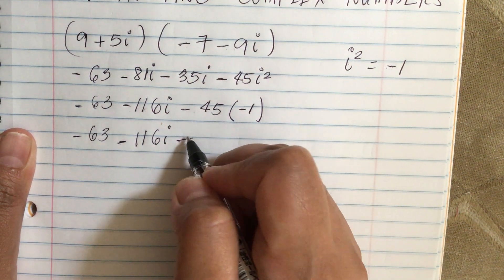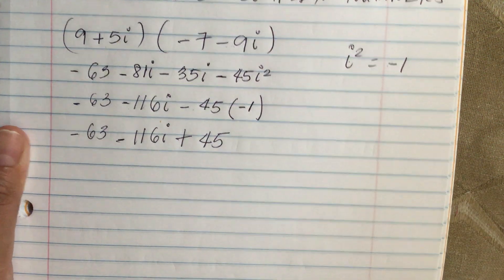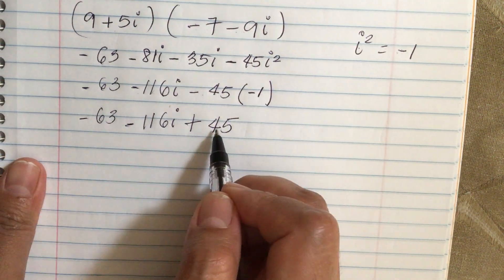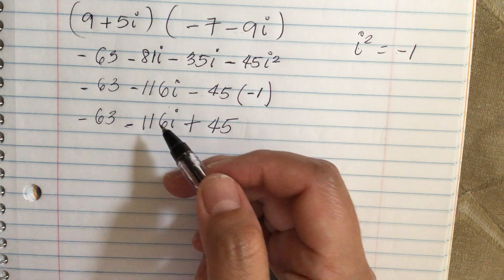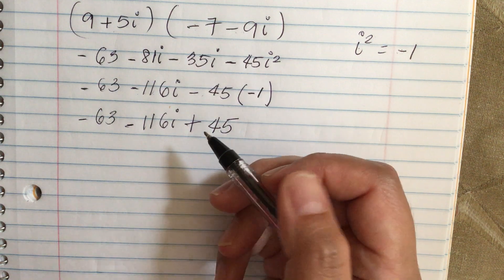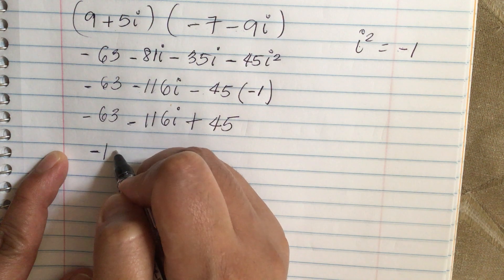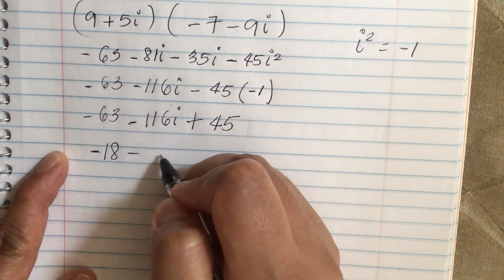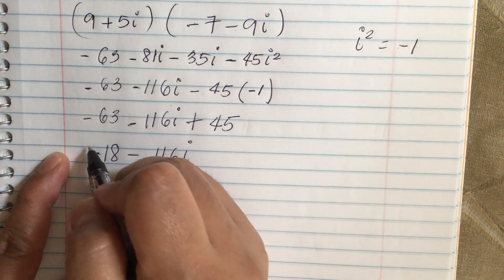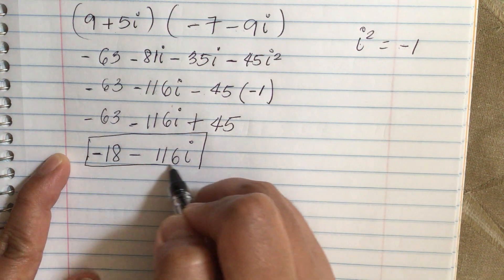For a net of plus 45. So we combine: 45 minus 63 is equal to minus 18. So we have minus 18 minus 116i. This is the answer.